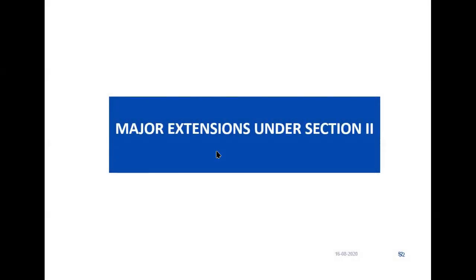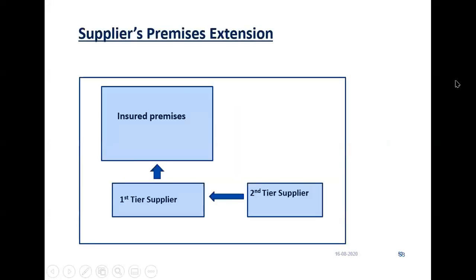Now let us continue with the major extensions under Section 2. Number 1 is Supplier's Promises. We are talking of CBI extensions. CBI means Contingent Business Interaction. Your normal BI means you will pay loss of profit only when there is a physical damage to the property within the insured premises.